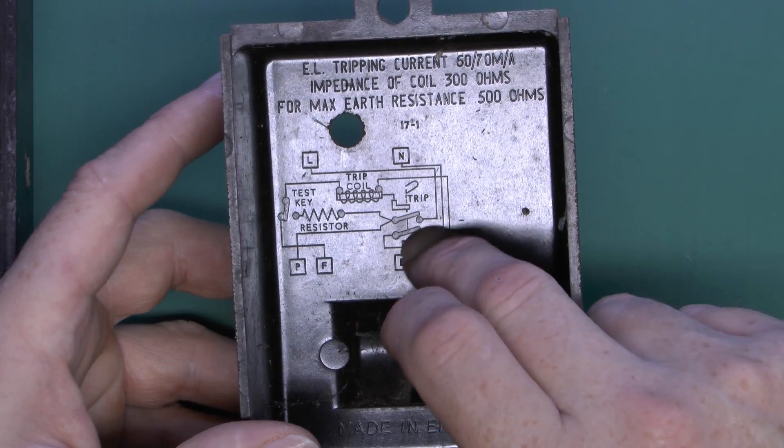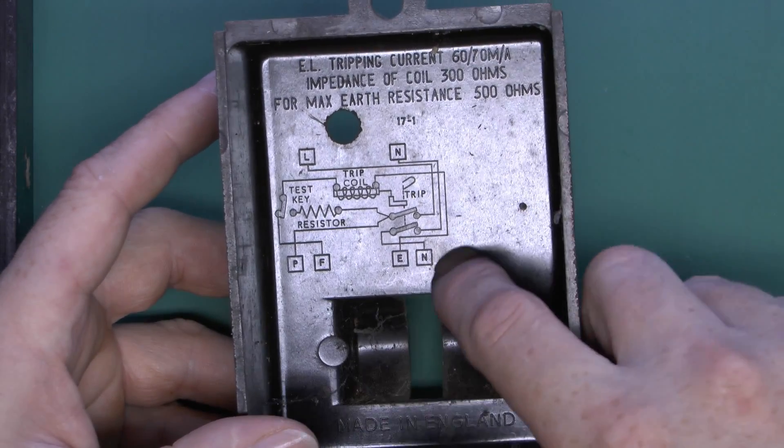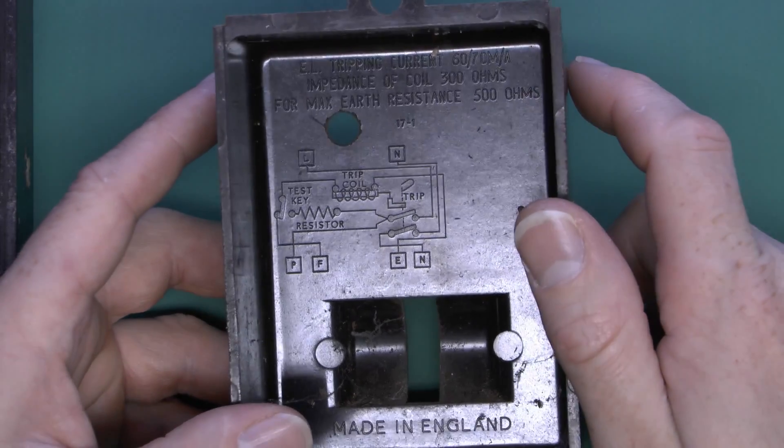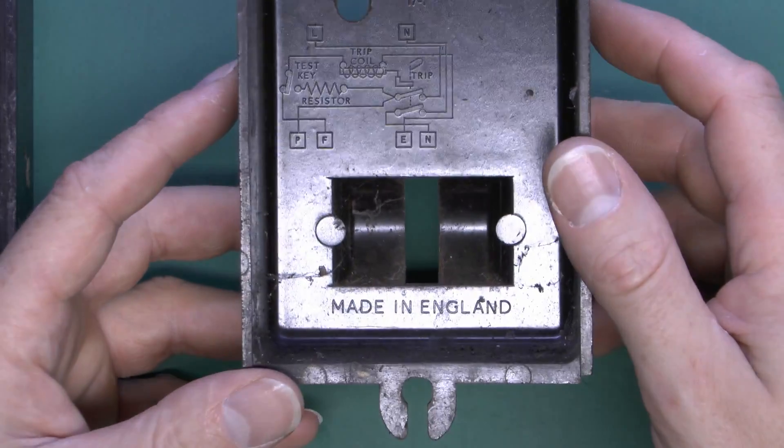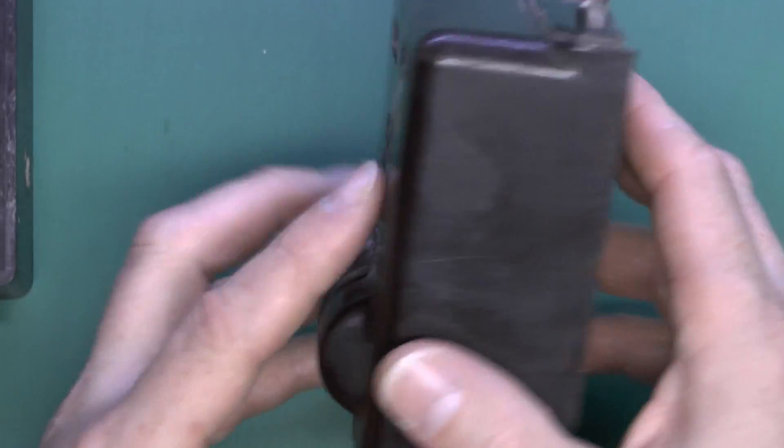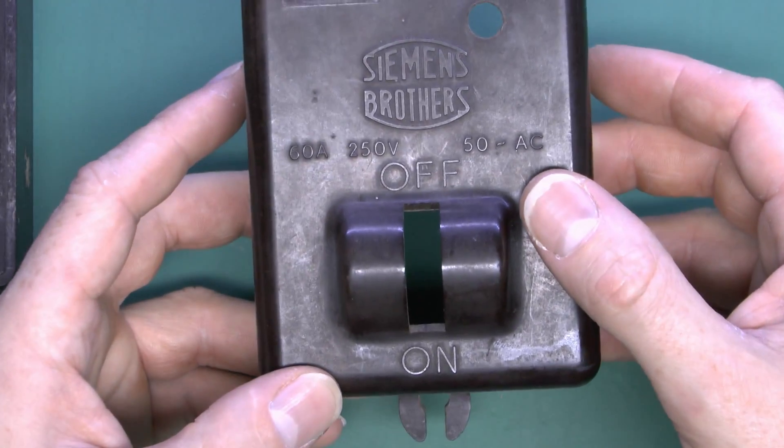Of course the trip mechanism then will magnetically pull a little bar or lever to disconnect the double pole switch. That disconnects the supply to your installation. Made in England at the bottom. Again the outside shows the on and off, the ratings, and the test hole at the top there.